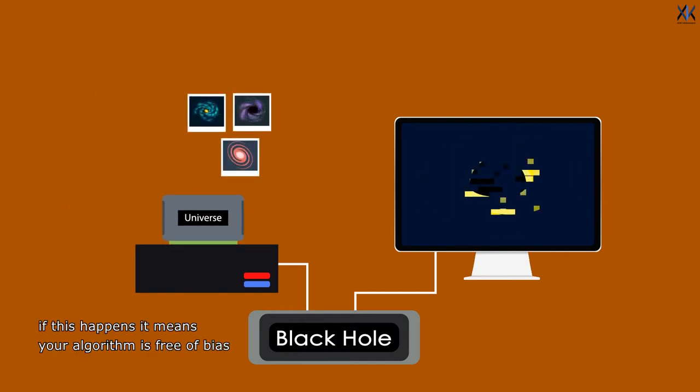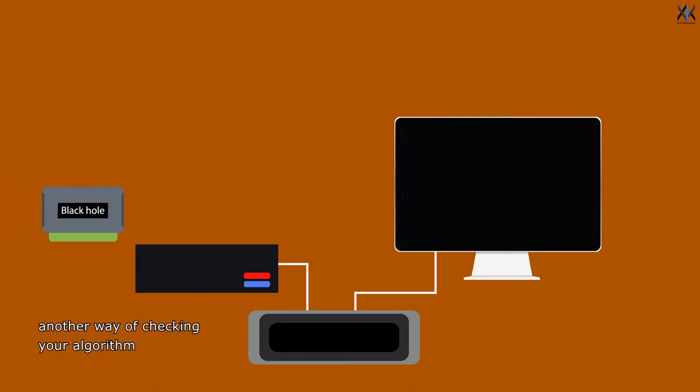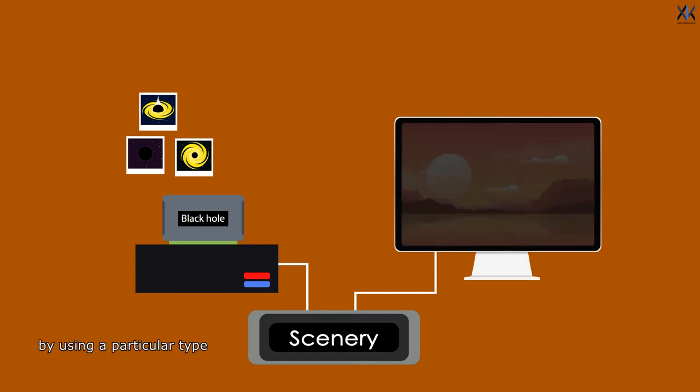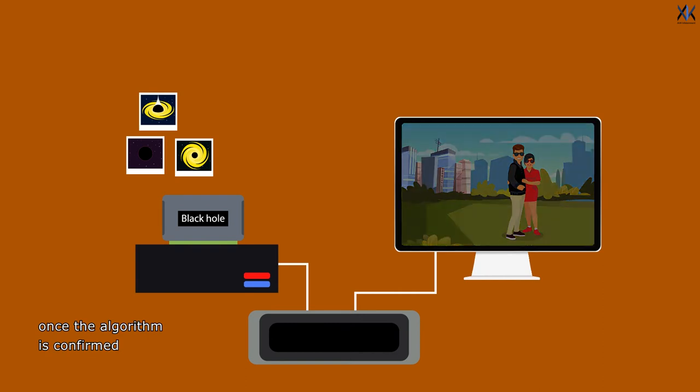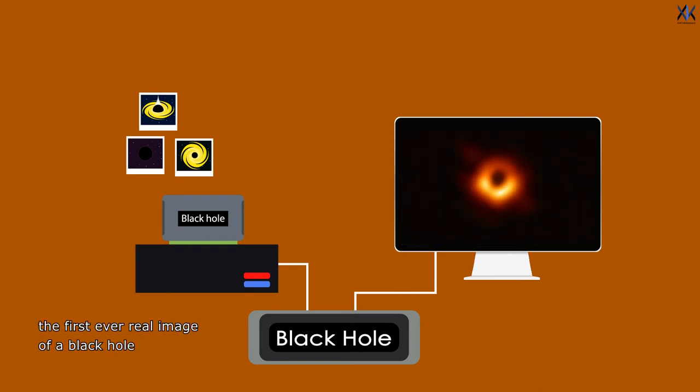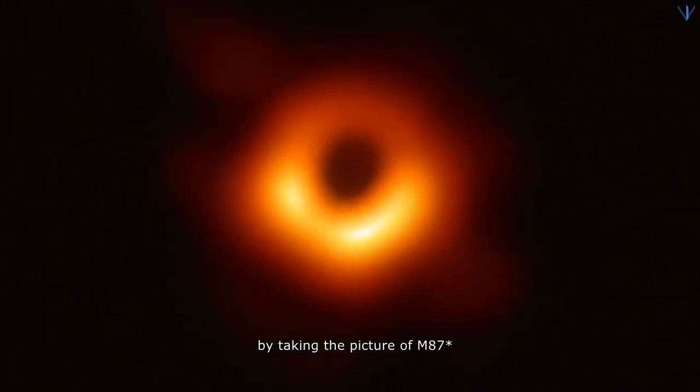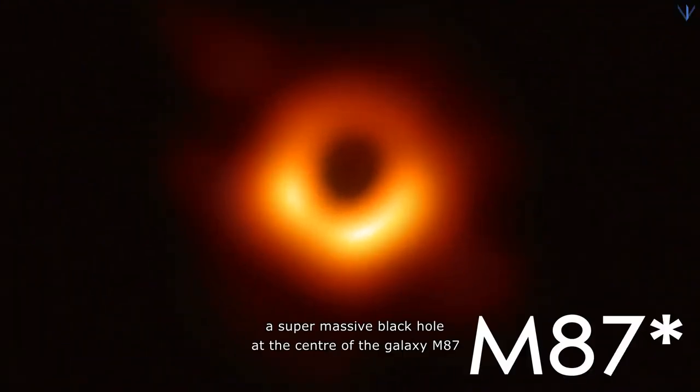If this happens, it means your algorithm is free of bias and can be trusted. Another way of checking your algorithm is to create many different types of source images by using a particular type and changing the information provided. Once the algorithm is confirmed, we can use it to create the first ever real image of a black hole, which we did successfully by taking the picture of M87 star, a supermassive black hole at the center of galaxy M87.